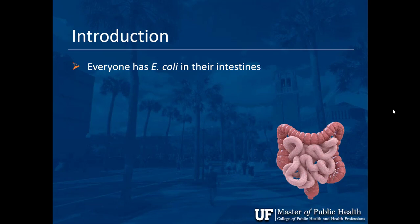Everyone has E. coli in their intestines. When you're born you don't have it — you don't develop it until about two days after birth when the system gets going. That's why you get a vitamin K injection as a baby, because the bacteria normally help you make vitamin K.